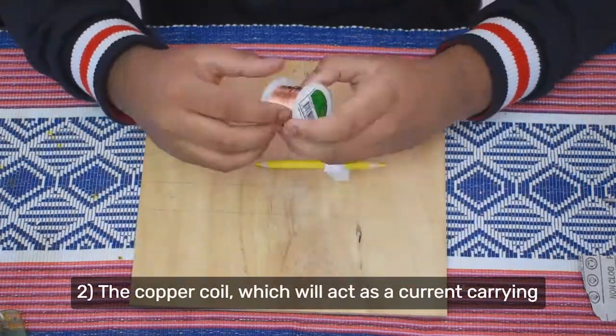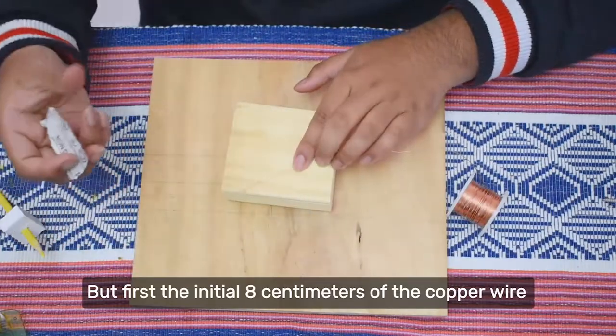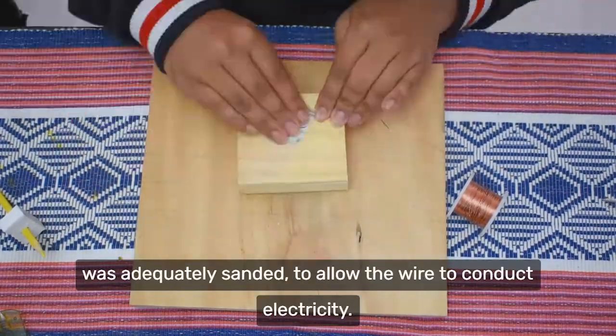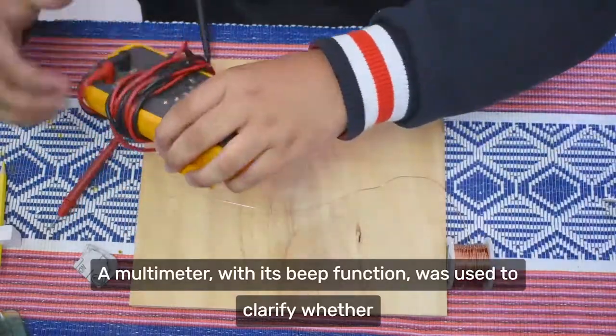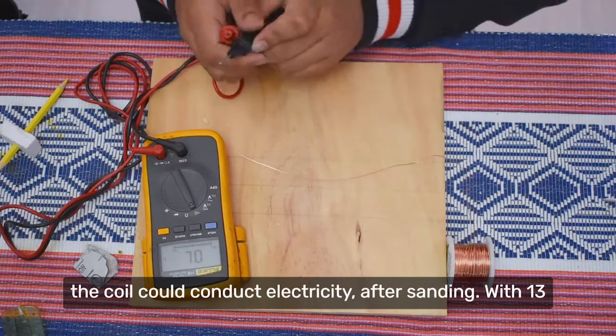2. The copper coil, which will act as a current carrying conductor, was wrapped around the styrofoam piece. But first, the initial 8cm of the copper wire was adequately sanded to allow the wire to conduct electricity. A multimeter with its beep function was used to clarify whether the coil could conduct electricity after sanding.